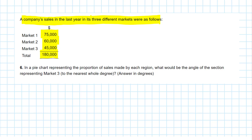Now, before we go further, we could calculate the percentage of each. If we put a column percent next to the monetary column, we know that the total of all would be 100%. We could then arrive at the percentage of each market using basic fractional math. So if I wanted to know market two in percentage terms, I would go 60,000 times 100 divided by 180, which comes to 33.3%. And that sanity checks, because 60 is one third of 180.